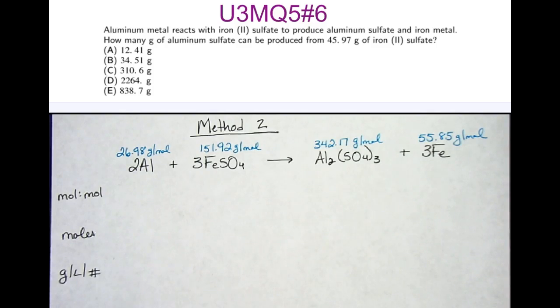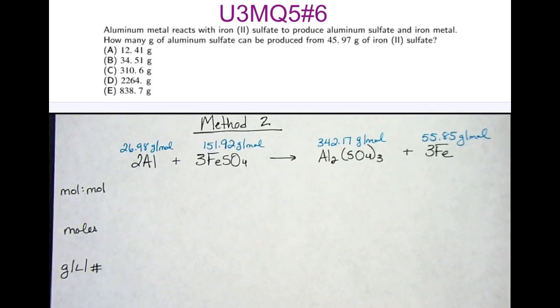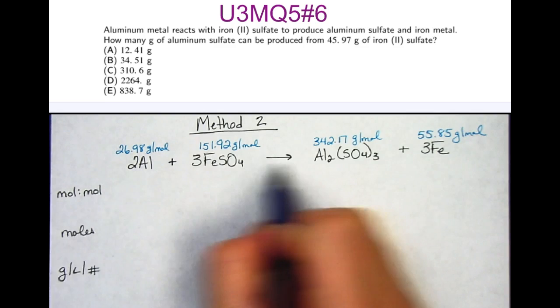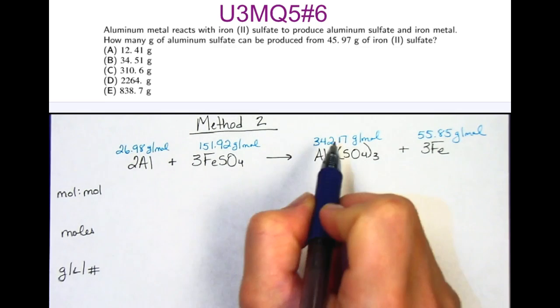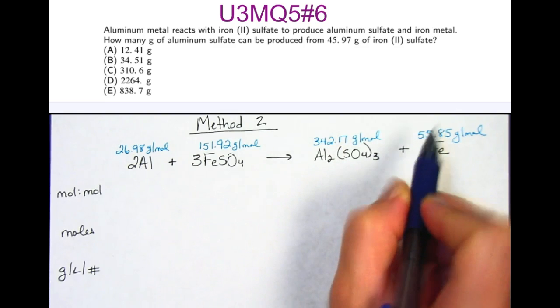If we use Method 2 in order to solve this calculation, we would first write out our balanced equation, and identify the molar masses of each of the compounds by going and adding them up on the periodic table.